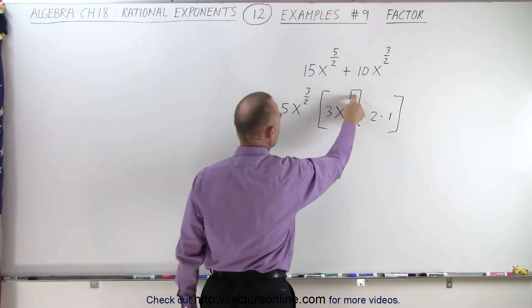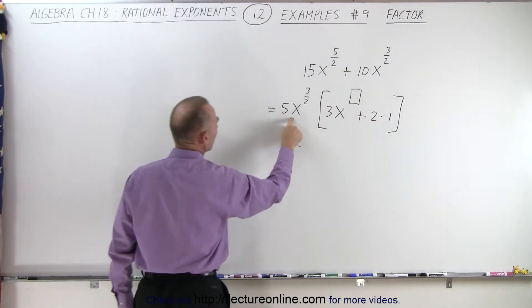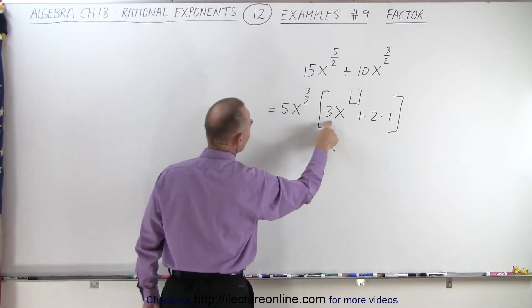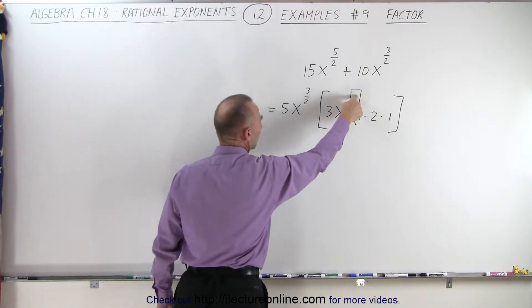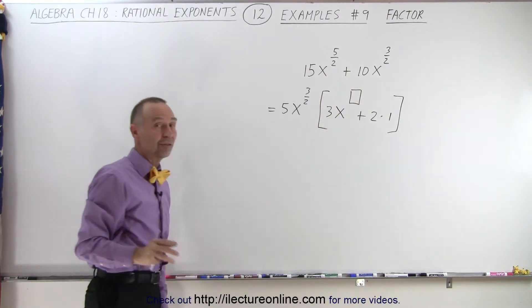But what exponent do we need over here? Well, again, what we can do is, when we multiply these two together, 5 times 3 gives us 15, and x to the three halves times x to some unknown exponent gives us back x to the five halves.